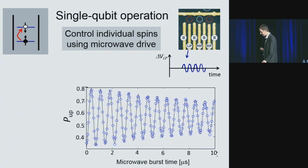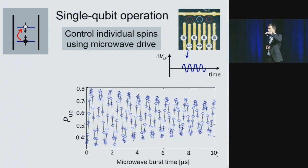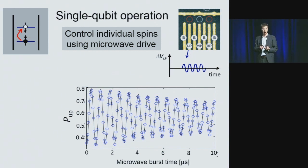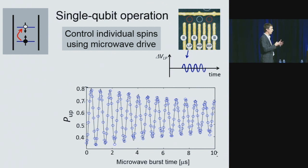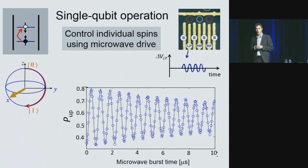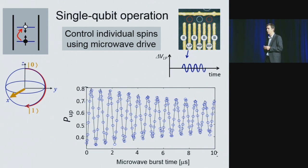For single spin control, we apply a microwave drive — say 20 GHz — to one of the quantum dot gates. This wiggles the electron back and forth around its average position, and due to spin-orbit coupling in the substrate, this translates to an effective magnetic field on the spin. When resonant with the spin precession frequency, this can manipulate the spin. Applying this drive for a carefully timed duration rotates the spin from up to down — a bit flip in computation.